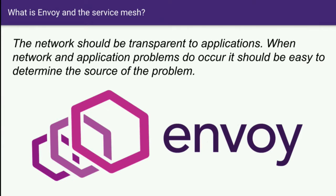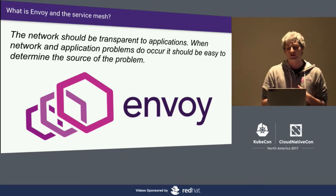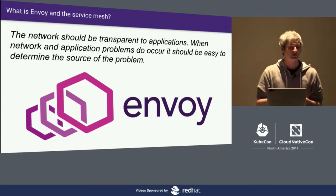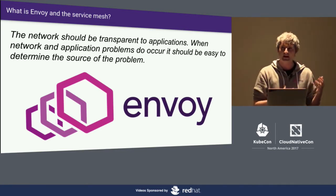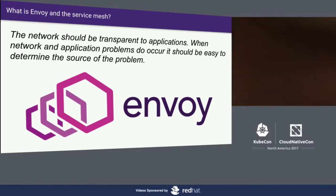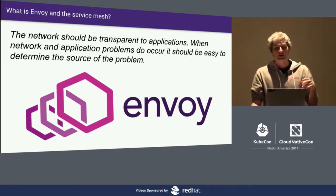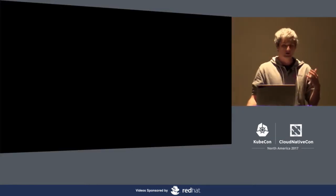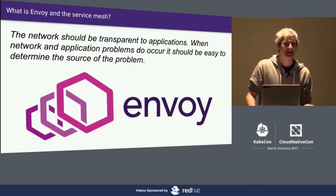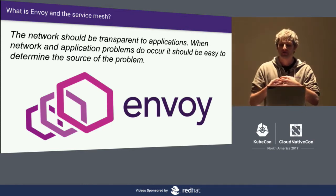What we find these days when people try to deploy microservice architectures is that the network is not transparent — it's a huge thorn in people's sides. It is very difficult to understand where problems are occurring. Is that problem in your application? Is it in the virtual infrastructure? Is it in some container runtime? It's almost impossible to know. A lot of companies find when they try to move from a monolith to a microservice architecture that they want the agility gains, but it becomes very problematic because people don't trust those services.